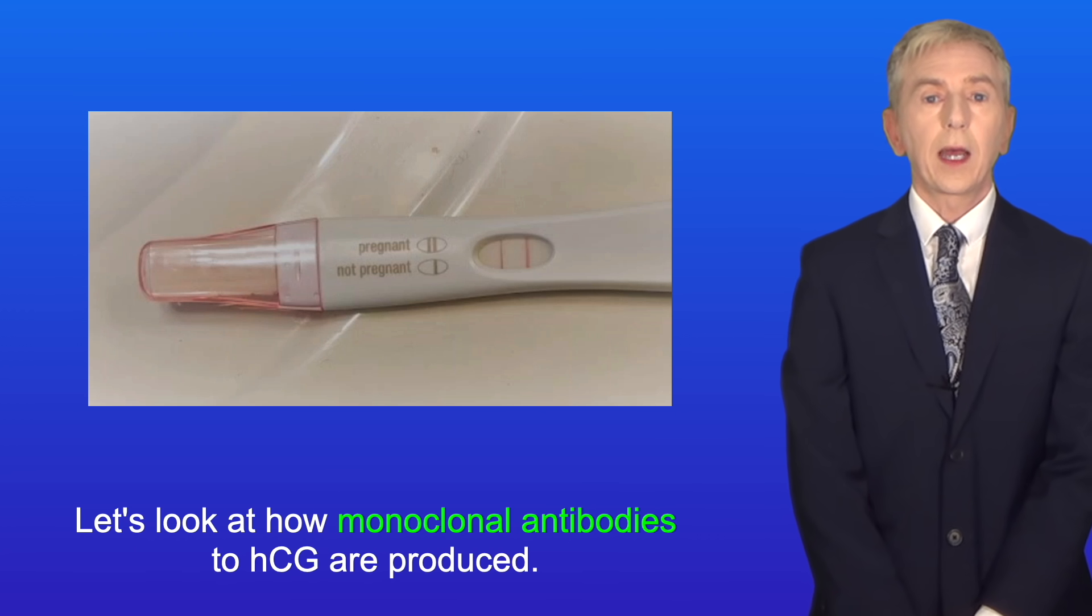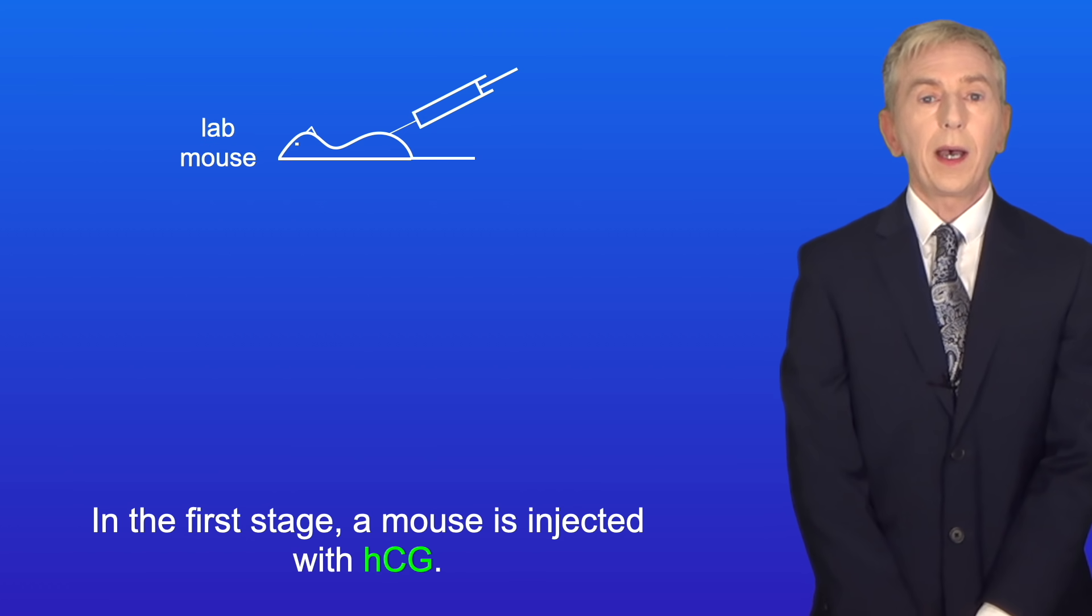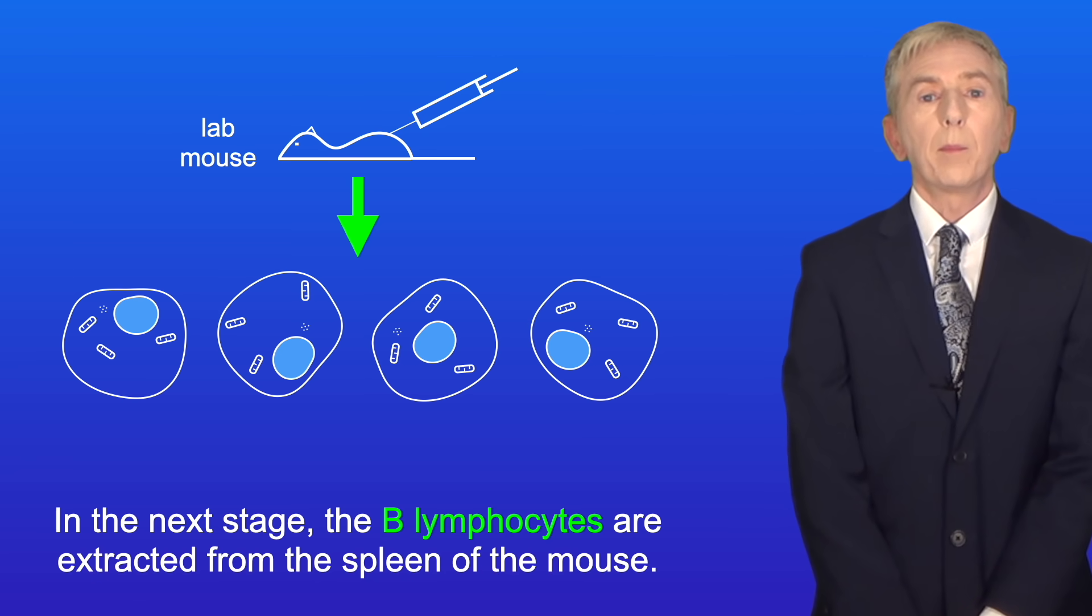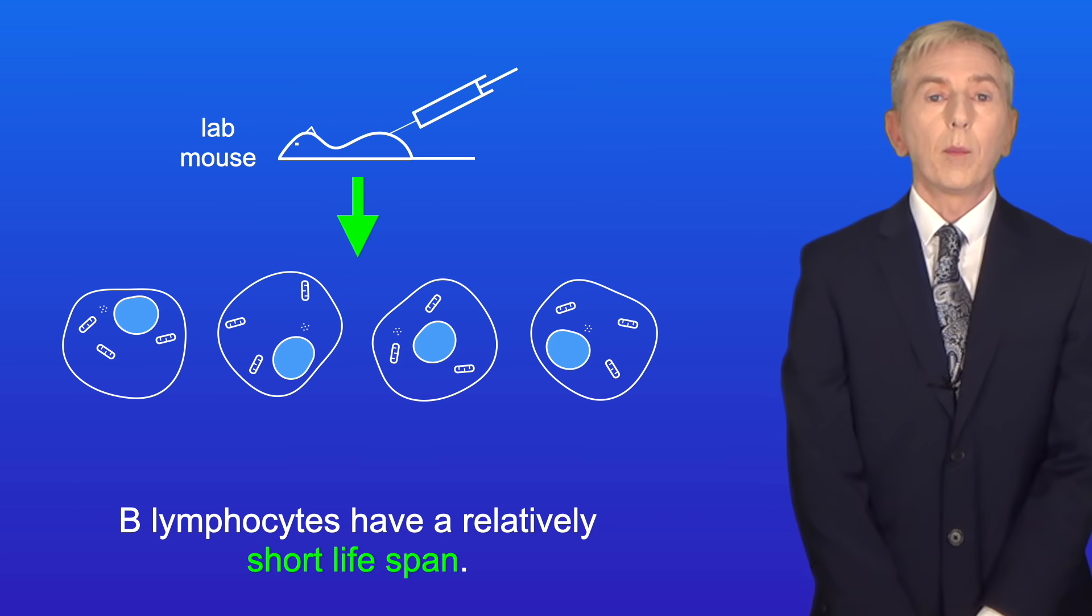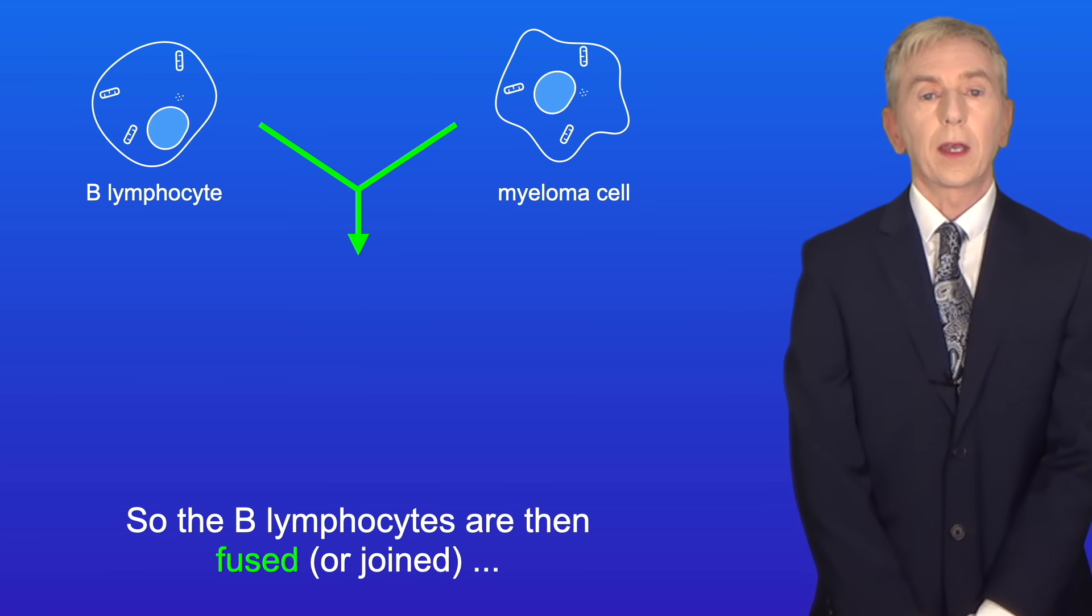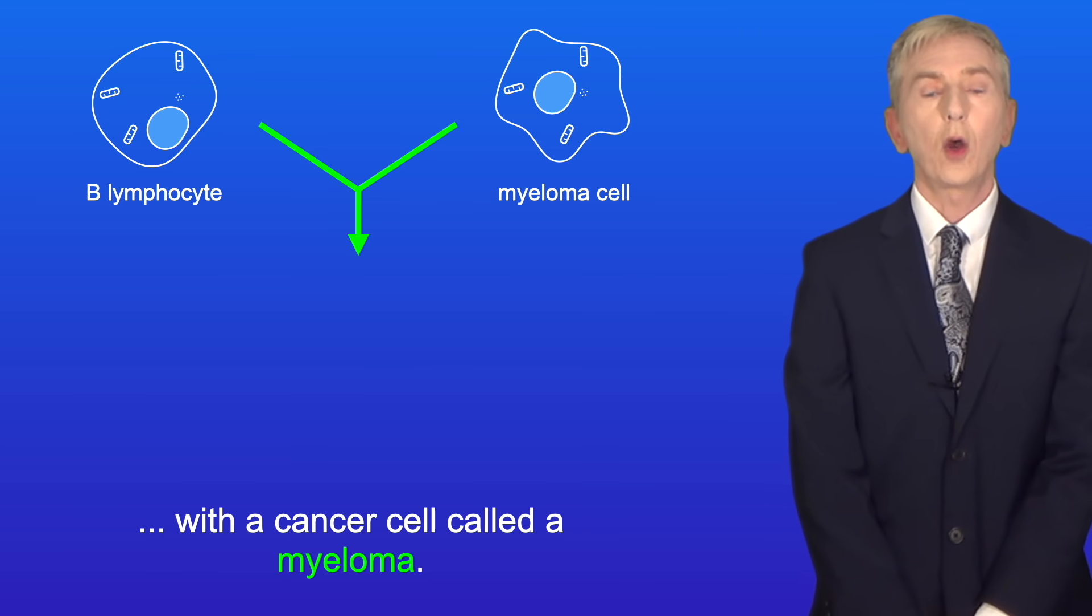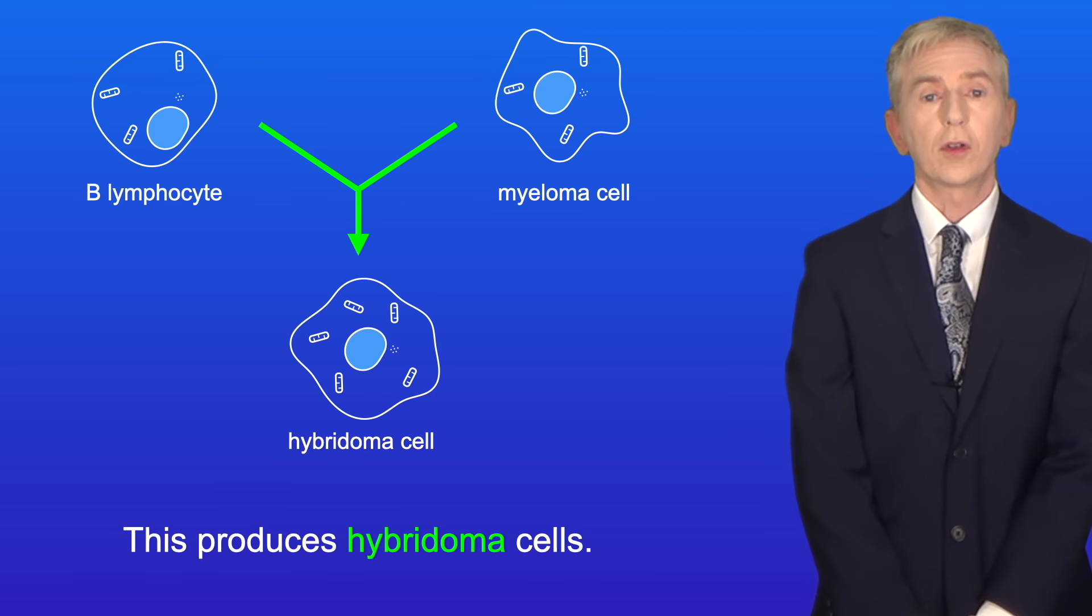So let's look at how monoclonal antibodies to HCG are produced. In the first stage, a mouse is injected with HCG. In the next stage, the B lymphocytes are extracted from the spleen of the mouse. Some of these B lymphocytes will produce antibodies against HCG. Now B lymphocytes have a relatively short lifespan, so the B lymphocytes are then fused or joined with a cancer cell called a myeloma, and this produces hybridoma cells.